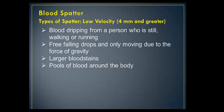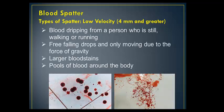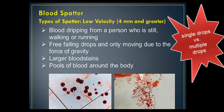And then finally, low velocity — four millimeters or greater. This would be if someone's walking, dripping blood — larger stains, a pool of blood would fall under this category. So these would be my drops, and if a drop falls in the same area, that would eventually make a pool of blood.